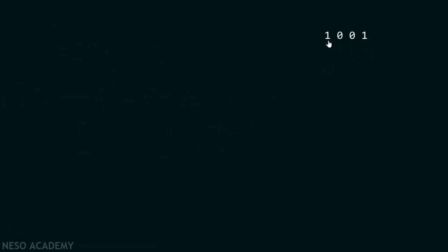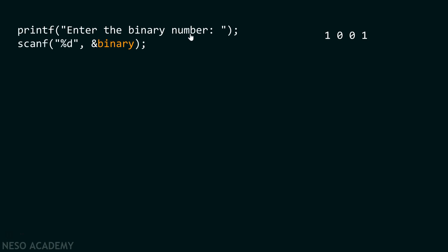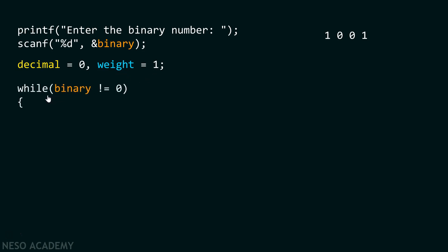Now let's dive into the code. Suppose the user wants to convert this binary number to a decimal number. We already know the decimal equivalent is 9, but we need to write code for it. We first ask the user to enter the binary number, which gets stored inside a variable named binary. Apart from that, we need two more variables: decimal and weight. Initially, the value of decimal is 0 and the value of weight is 1. We also require a while loop which runs only when binary is not equal to 0.